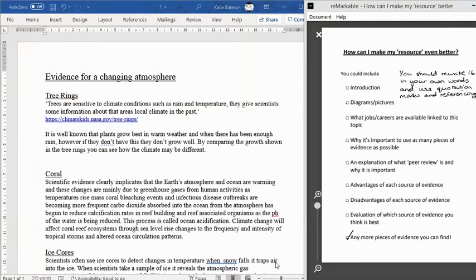So to make their resource even better, they should rewrite it in their own words using quotation marks and referencing where necessary. It would also be quite nice if they included some diagrams. Now, diagrams and pictures, if used from the internet, you can reference it in the same way that you would do for a small quote. One thing that would make this even better as well is if they talk about the advantages and disadvantages of each source of evidence.